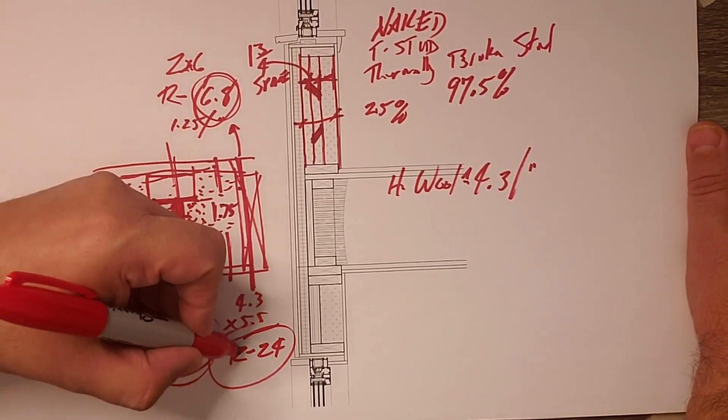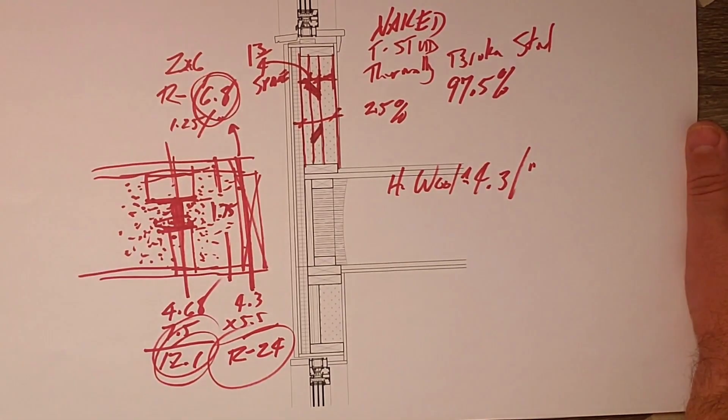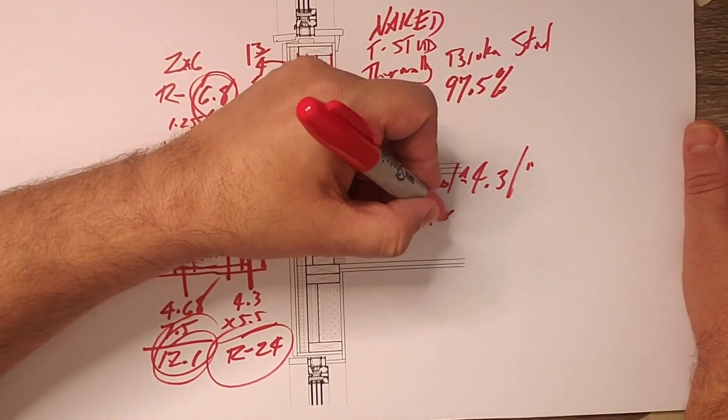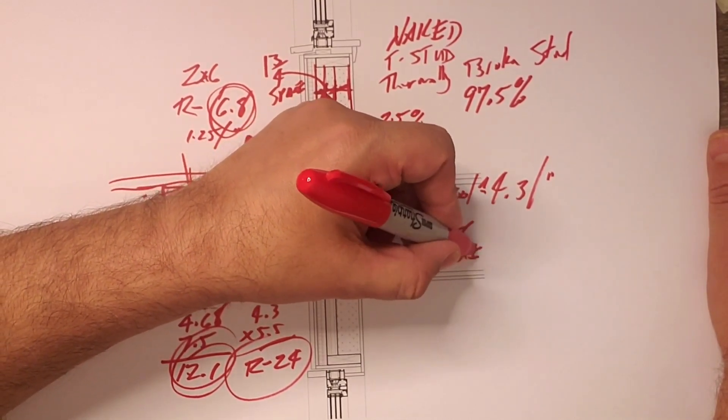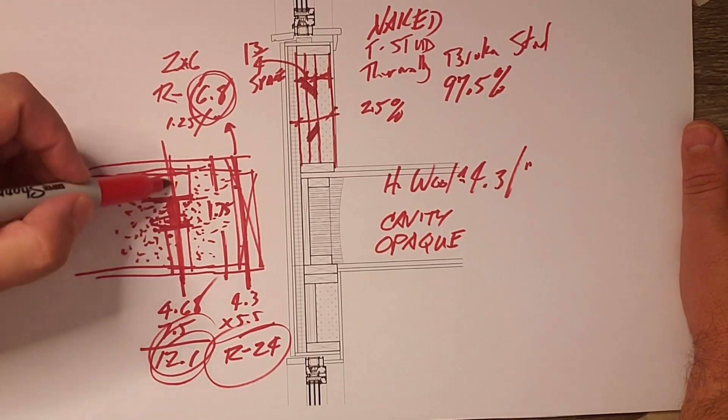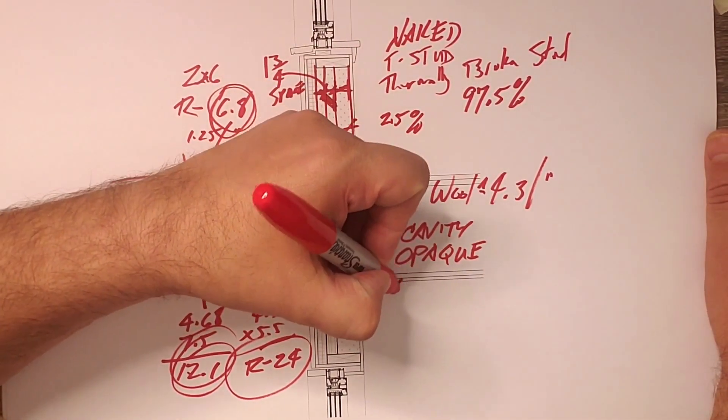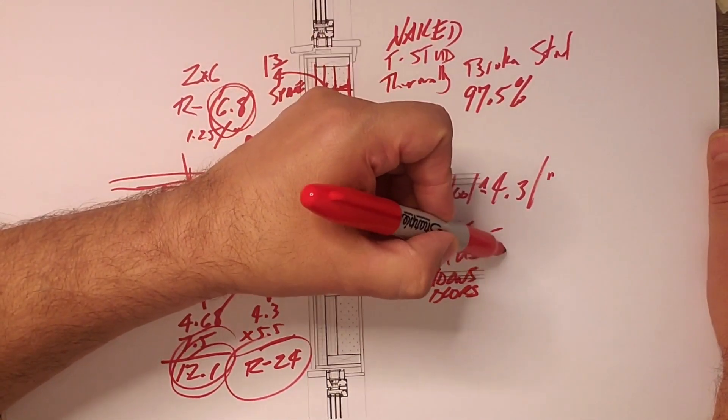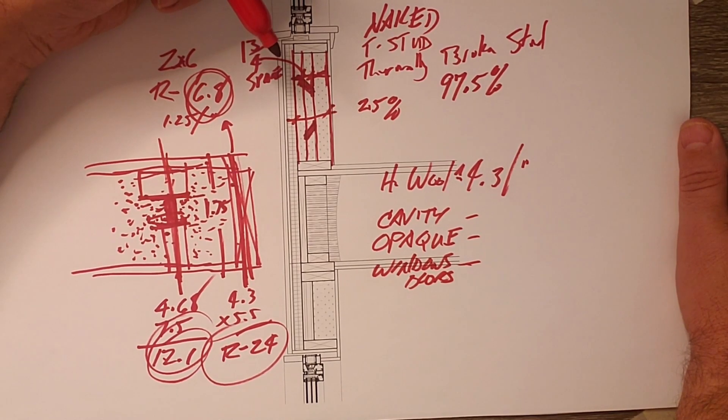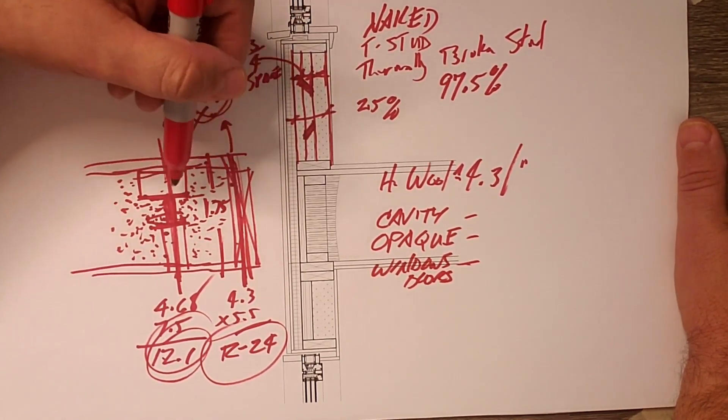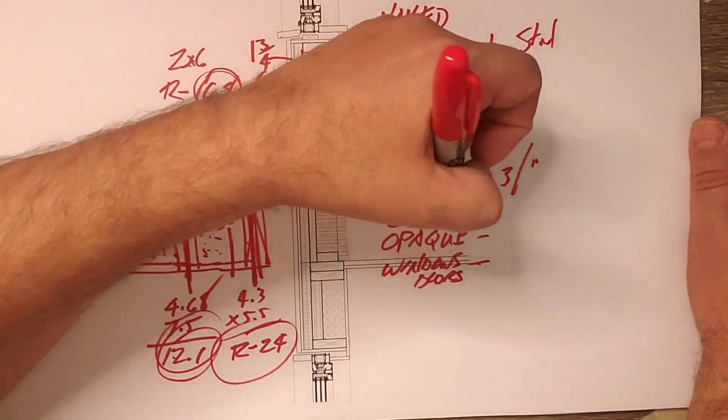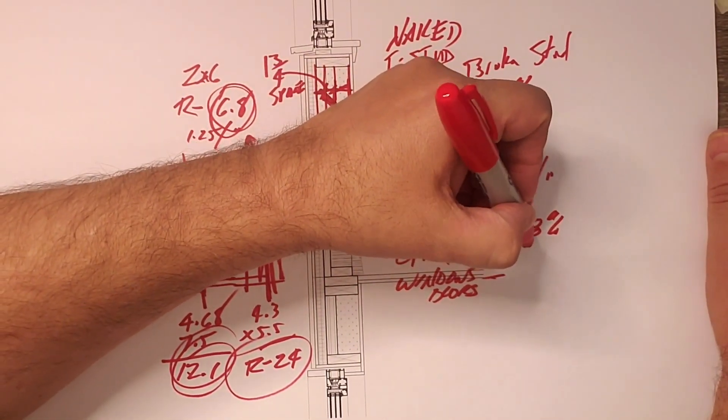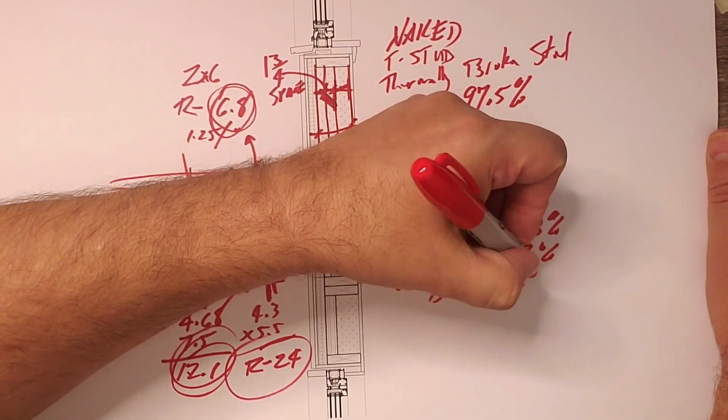But the reality is if we put this house together there's three numbers that play a role there's the cavity number there's what I call the opaque number and the opaque number is where we have framing so it's either at the T-stud or solid stud and then of course we have windows and doors. Now in a typical house that we do with Jake in this case where we do our two by six studs doing 24 inches on center the cavity is going to account for something like about 68 percent, the opaque area is going to account for about 12 percent and the windows and doors well they make up about 20 percent.